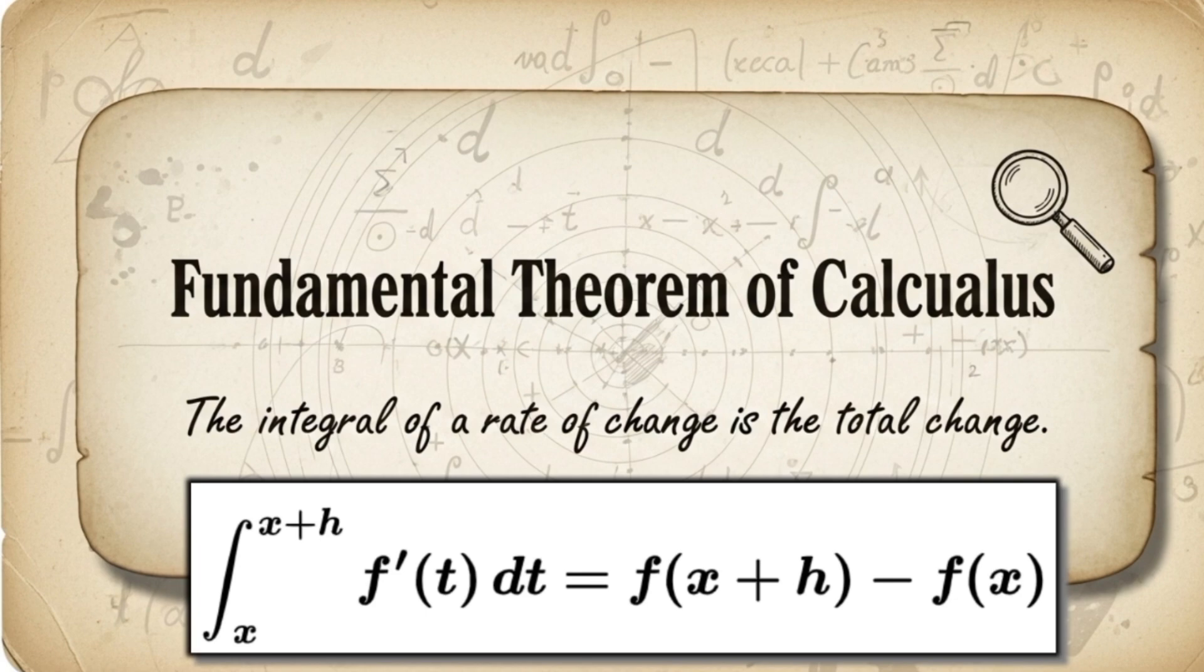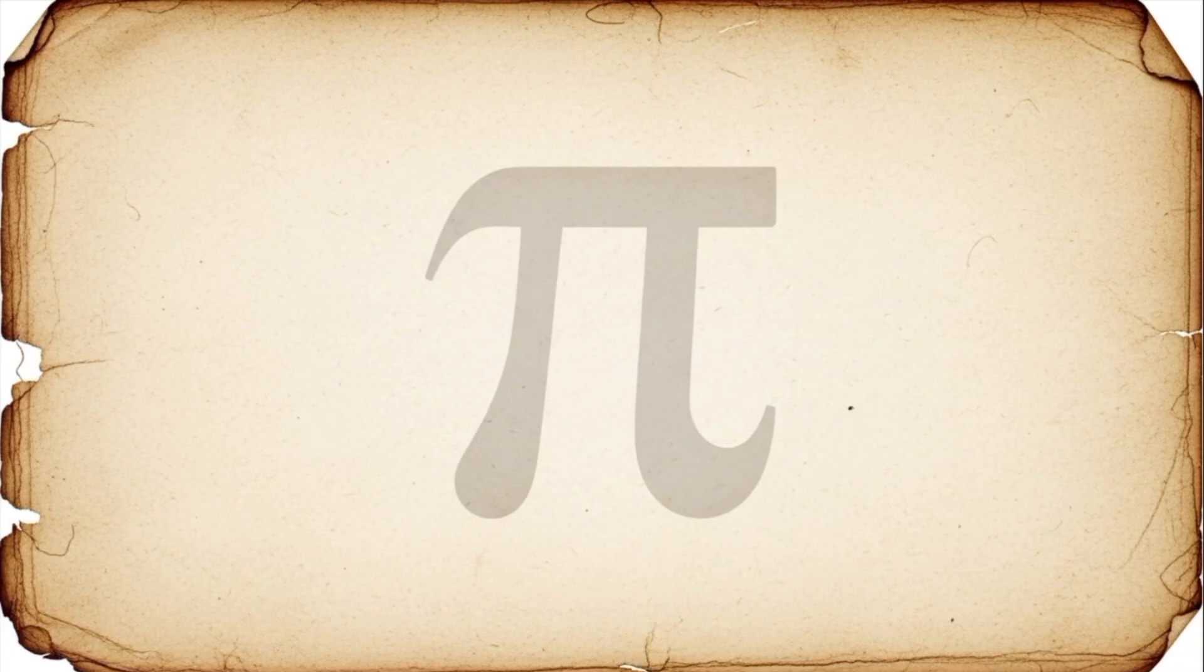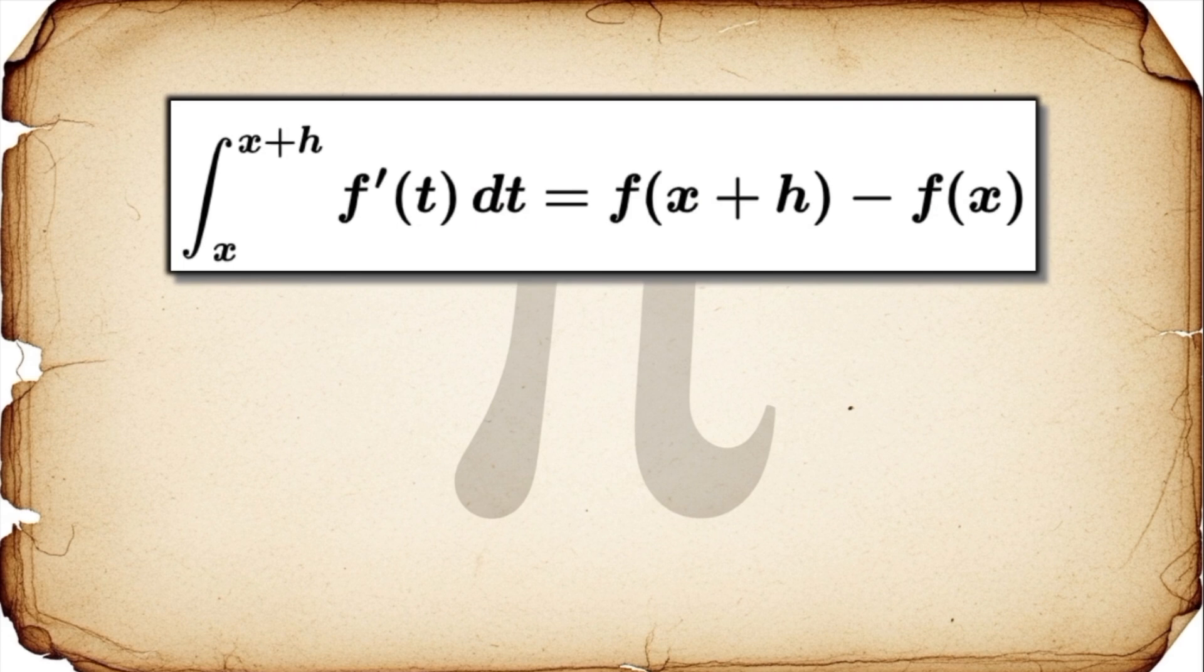Okay, so just watch this. It's really neat. Let's take that integral part in our new, weird definition, the integral from x to x plus h of f prime of t dt. Thanks to the fundamental theorem, we know that whole thing is just f of x plus h minus f of x. So let's swap it out.